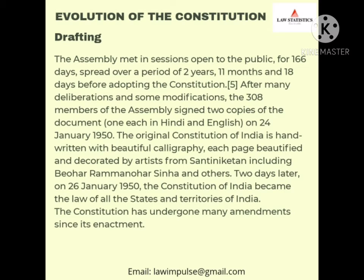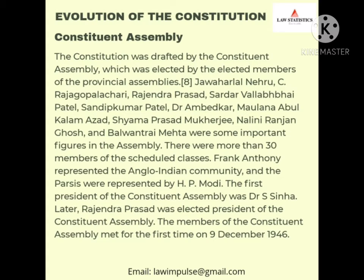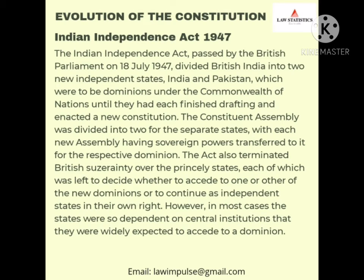The assembly met in sessions open to the public for 166 days, spread over a period of 2 years, 11 months, and 18 days before adopting the constitution. The constitution was drafted by the constituent assembly, which was elected by the elected members of the provincial assemblies. The Indian Independence Act 1947 divided British India into two independent states — India and Pakistan.